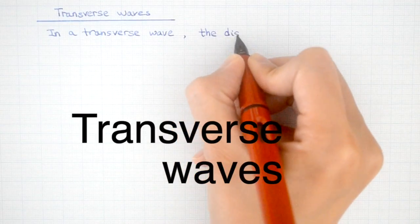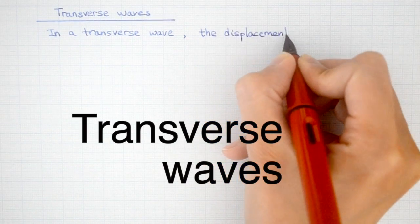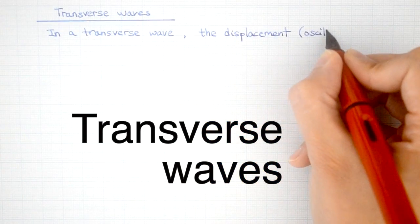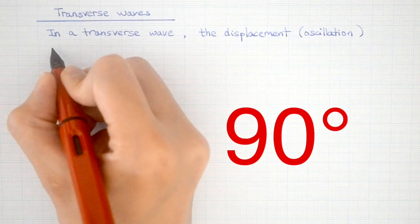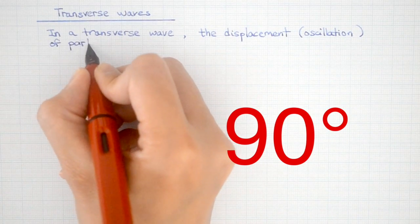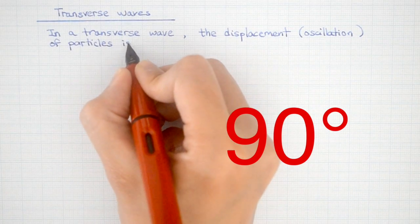The first type is transverse waves. In a transverse wave, the particles oscillate at 90 degrees to the direction that the wave itself travels.